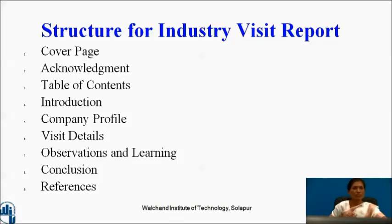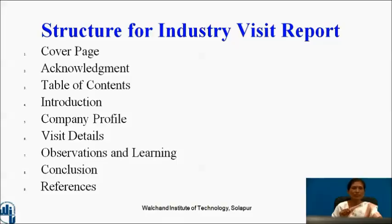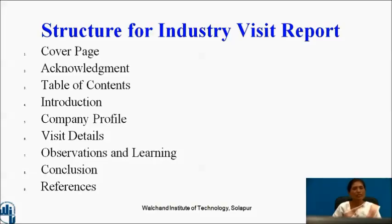The structure to be followed for writing an industry visit report is: first, the cover page; then acknowledgement; table of contents, which includes the index page with serial numbers and chapter headings such as the company profile. You must search out the company profile and write it in short. Then visit details, observations and learning — because in the classroom you learn theoretical things, and through observation you apply them — and finally a conclusion summarizing all these points.